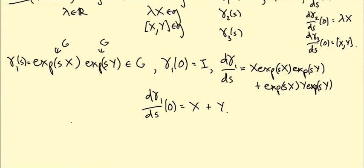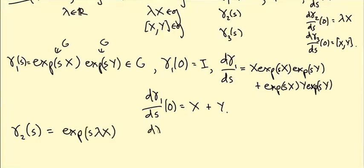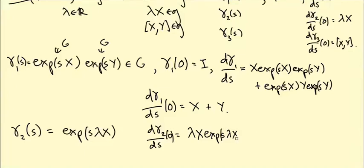For γ₂, we need a path whose tangent vector is λX. Take γ₂(s) = exp(sλX). Differentiating gives λX·exp(sλX), and setting s=0 gives λX. So that is the second path we need.